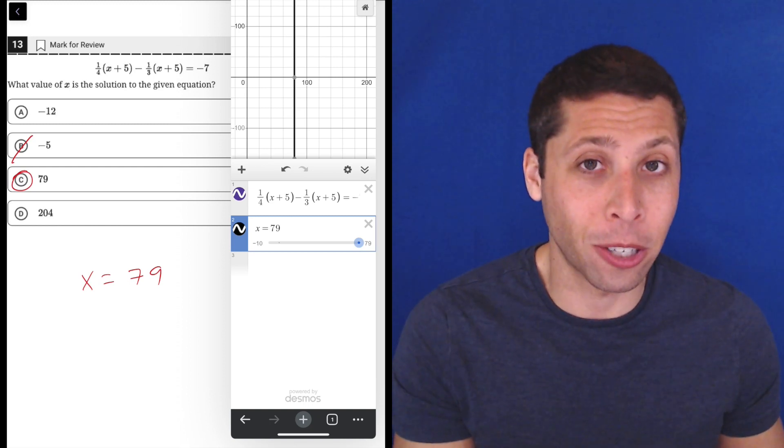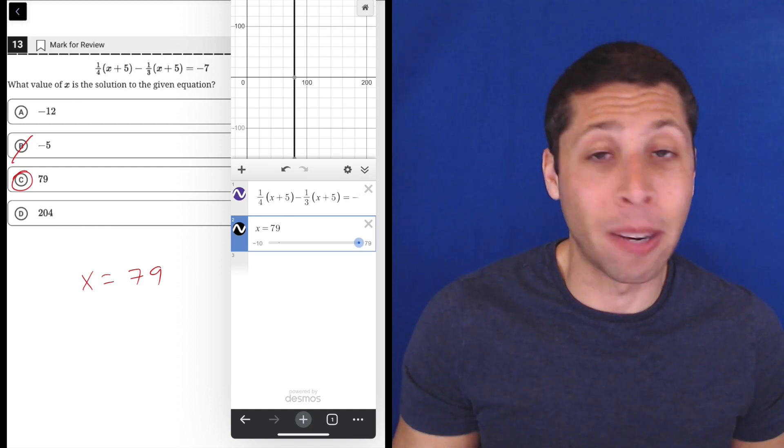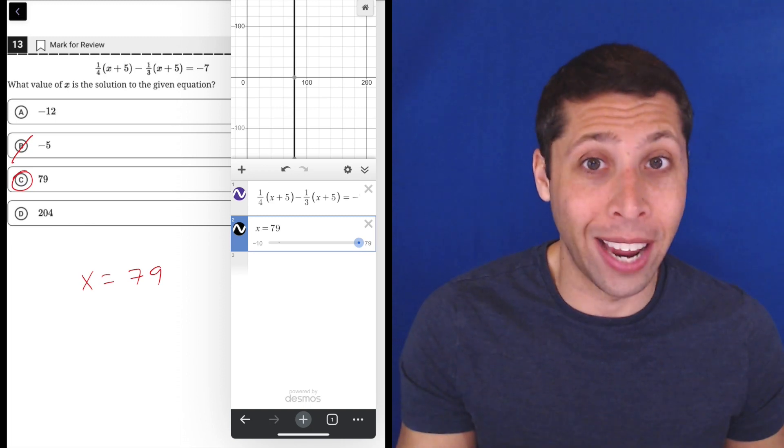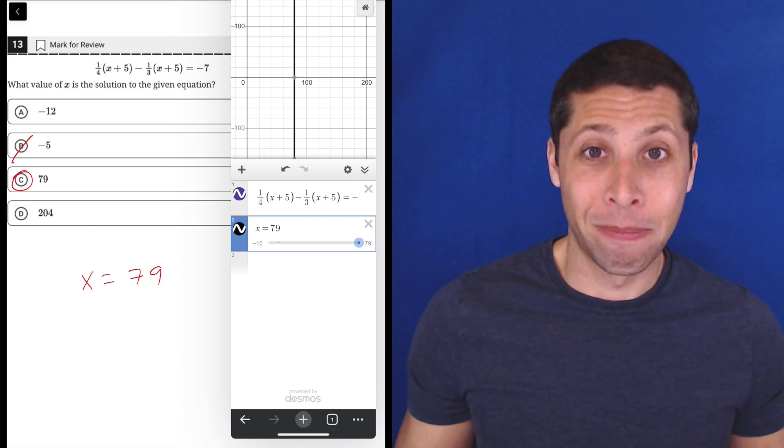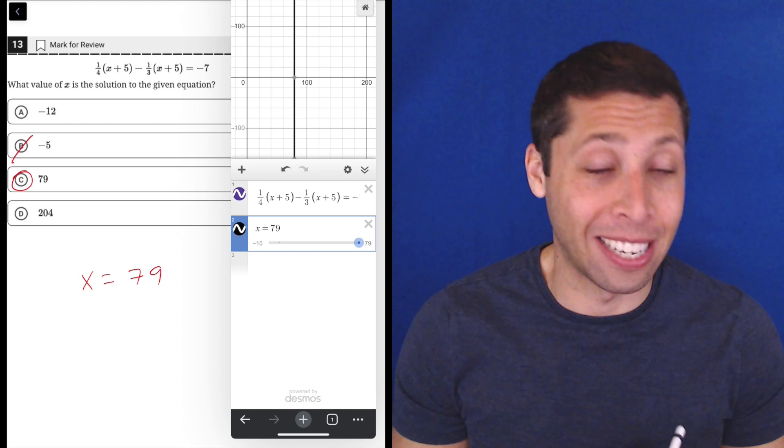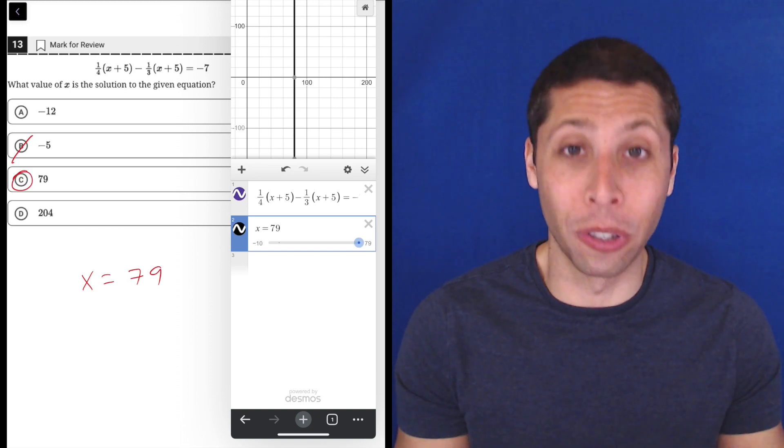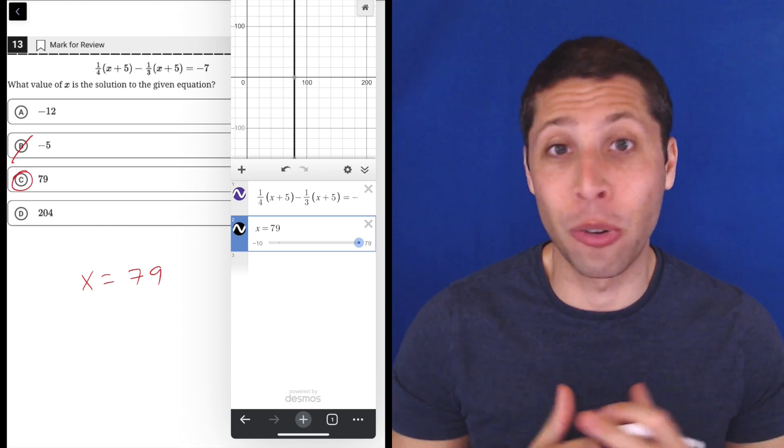Just enter it correctly, double check that you entered it correctly, and you should be fine to get most algebra solving questions right without actually doing any algebra. That's how you get better at the PSAT and SAT. You learn the tools that they give you and you just use them as much as you can.